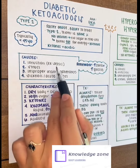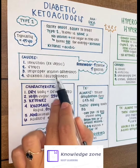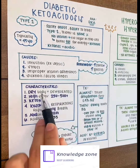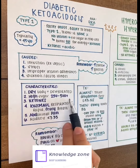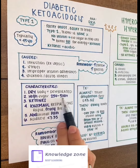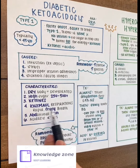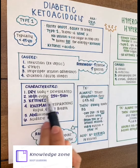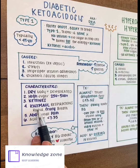DKA can also be caused by infection, acute illness, and not taking insulin. We'll see patients that are dehydrated with high sugars, 250 to 500. Note that ketones, Kussmaul respirations, and abdominal pain are major signs specific to DKA.